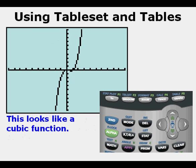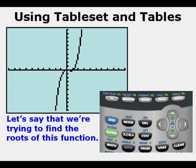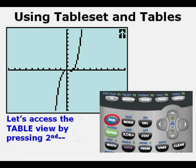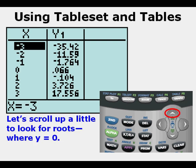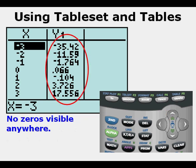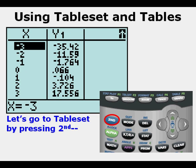Now let's look at this graph function — it looks like it could be a cubic function. Let's say that we're trying to find the roots or zeros of this function. We'll go to the Table View by pressing Second, then Graph, and scroll up to look for roots — that is, where y equals zero. We see no zeros anywhere in the y1 values column. So let's go to Table Set by pressing Second, then Window.